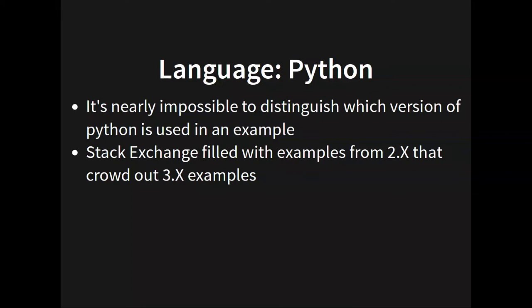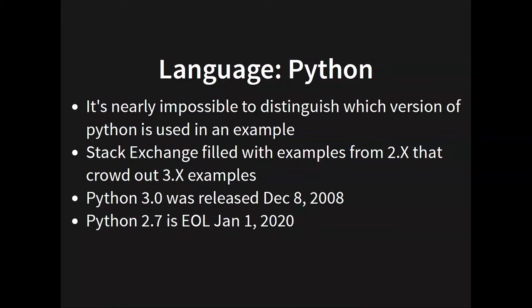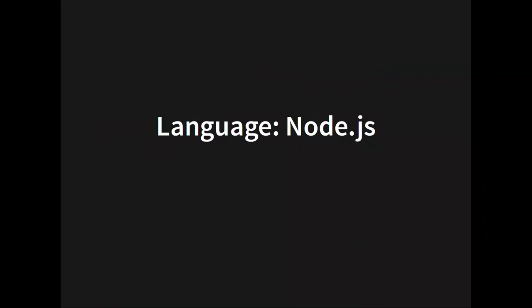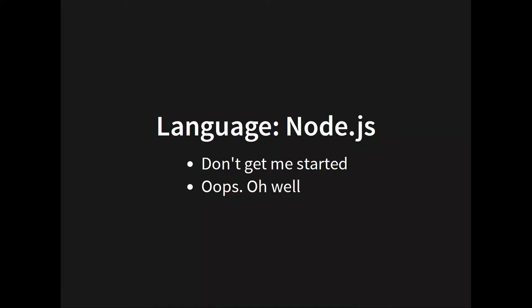The sheer volume of Python 2.x examples has crowded out the 3.6 and 3.7 examples. Python 3.0 came out almost 11 years ago. Python 2.7 is end of life January 1st. Node.js is a house of cards in a room full of hair dryers — and that's me talking about the code. I can't talk about the documentation because there isn't any. The best you can hope for is a README.md in somebody's GitHub, and that's how you deploy the code too.